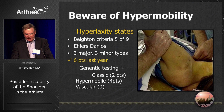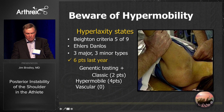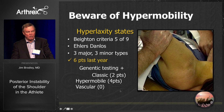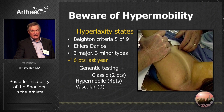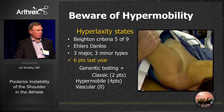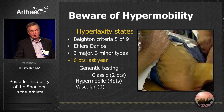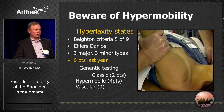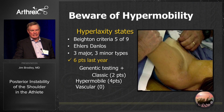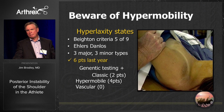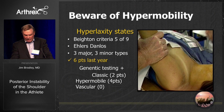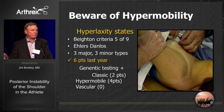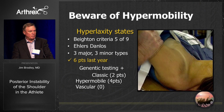You want to be aware of hyperlaxity states. The Beighton classification — you've got to remember those. Anybody that's five out of nine, look it up. Last year alone, we diagnosed six patients with Ehlers-Danlos syndrome just from our physical exam. It used to be 11 different types; now it's down to three major and three minor types. The most common in our group is the hypermobile type, which we treat totally differently than our normal posterior instability.